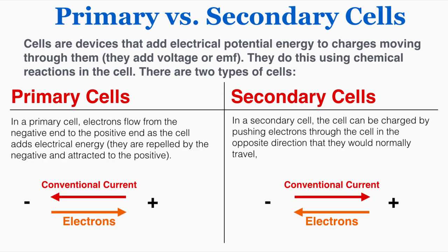In a primary cell, electrons flow from the negative end to the positive end as the cell adds electrical energy. They're repelled by the negative end and attracted to the positive end. The electrons go in this direction toward the positive, and because the conventional current points in the opposite direction of the electrons, it goes from positive to negative.